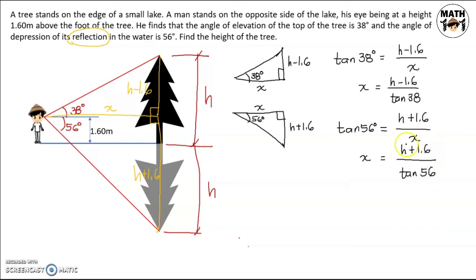So we now have two equations for x. If this equals x and this also equals x, we can equate them. So we'll have h minus 1.6 over tangent of 38 equals h plus 1.6 over tangent of 56.